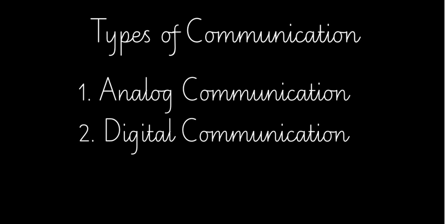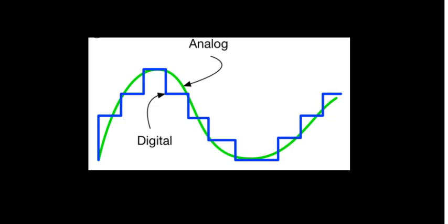What are the types of communication systems? Basically, there are two types: the first is analog communication and the second is digital communication. Analog communication sends a continuous signal over time. Digital communication sends a discrete signal — analog can take any value from minus infinity to infinity, while digital signals can only take a value of zero or one, as you learn in digital electronics. Details about this will be discussed further in the next lecture.